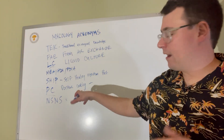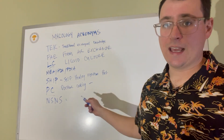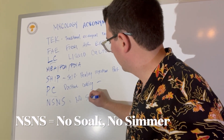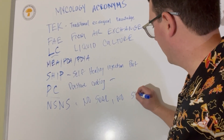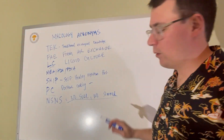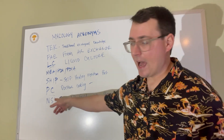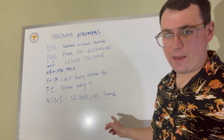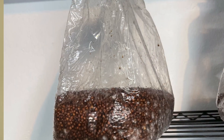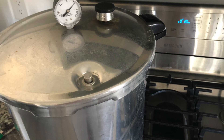The last off-beat acronym I see pop up is NSNS — No Soak No Simmer. That's shorthand for a method of making grain spawn where you take the correct volume of water and grains, put them together in a container, and then pressure cook them until they're sterilized.